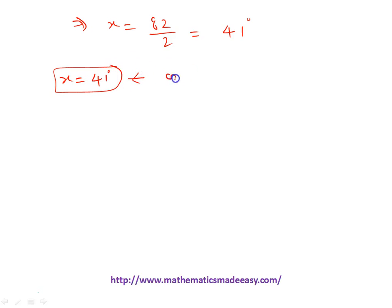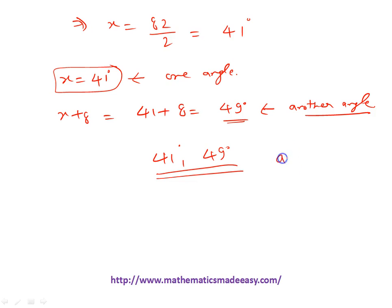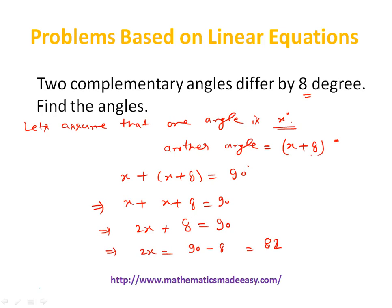So 41 degrees is one complementary angle. The other one would be x plus 8, that is 41 plus 8, which is 49 degrees. So we have got two complementary angles: one is 41 degrees and another is 49 degrees. This is your solution. We used the formula that the sum of two complementary angles is 90 degrees.